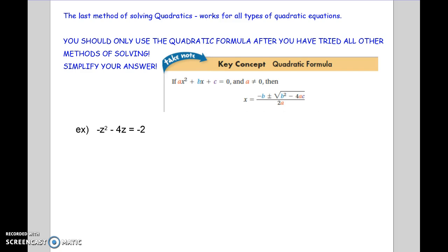So let's look at this problem. The first thing we want to do is figure out what our a, b, and c is. But the only way that we can do that is if it's equal to 0. So I'm going to add the 2 to the other side. So now I have everything equal to 0. And I can go ahead and figure out my a, b, and c. So my a is negative 1. My b is negative 4. And my c is 2.